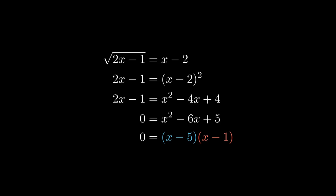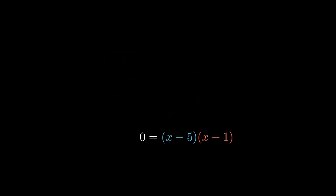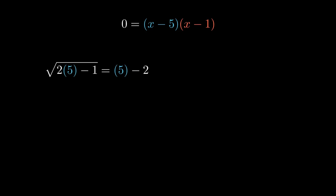But that's not the whole story. If we go back to our original equation, we can test that we solved correctly by plugging in, say, x equals 5. Root 2 times 5 minus 1 equals 5 minus 2. So root 10 minus 1 equals 3, root 9 equals 3, and 3 is equal to 3. In the end, x equals 5 makes that equation true.